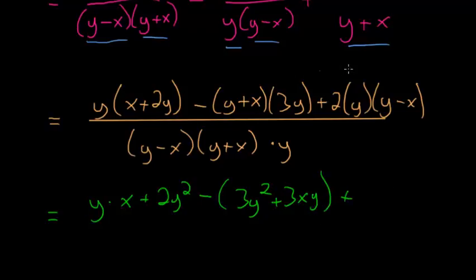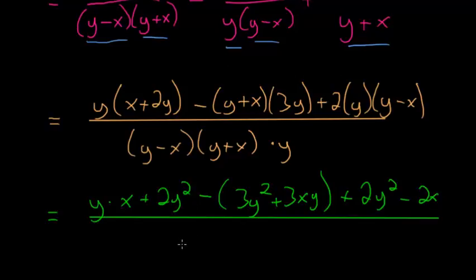And then this last one, we'll have to distribute this 2y to the y minus x. So we have plus 2y squared minus 2x. And this is all divided by that common denominator, y times y minus x, times y plus x.